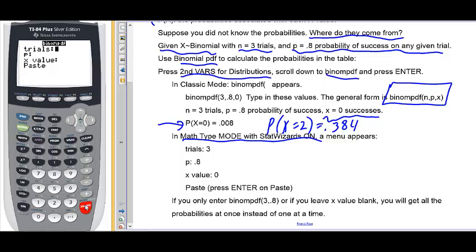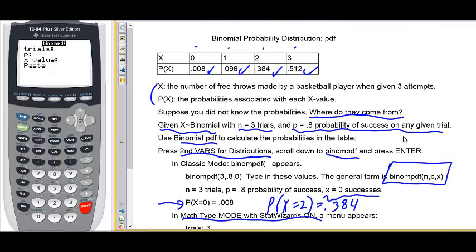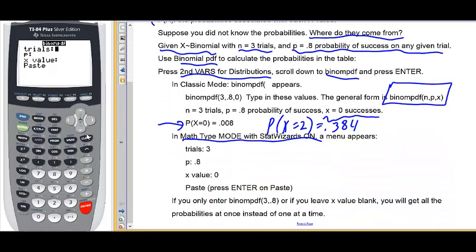The number of trials means the number of attempts. Back up in the original problem. Remember that we're given three attempts. The player is given three attempts. And p, probability of success on any trial, is going to be point eight. So, remember that.